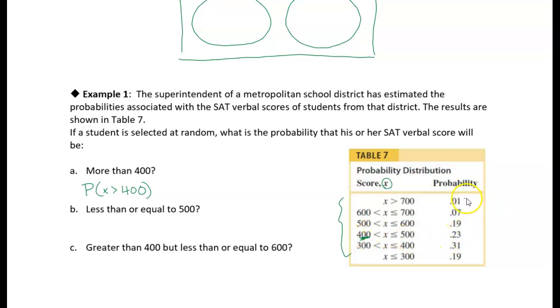So we need to add up all of these probabilities. So we're just going to add 0.23 plus 0.19 plus 0.07 plus 0.01. And if you add all of that up, you get 0.50. So 50% chance that a student selected at random will have scored greater than 400.